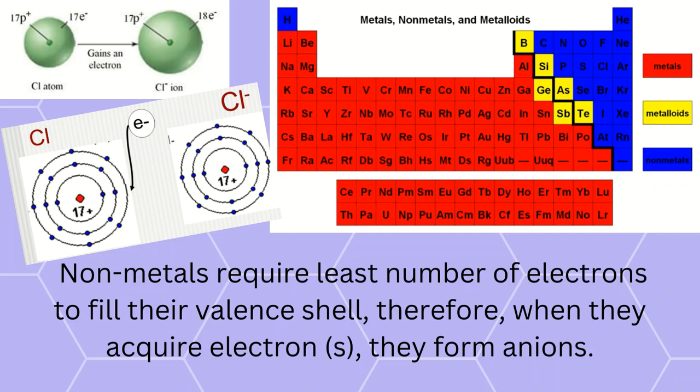Non-metals require the least number of electrons to fill their valence shell. Therefore, when they acquire electrons, they form anions. Non-metals are located on the upper right side of the periodic table.